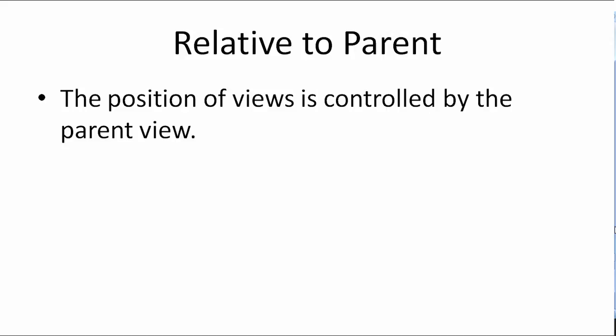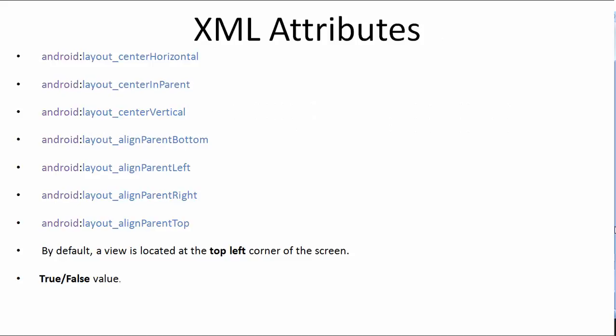Here are the XML attributes for relative-to-parent positioning: android:layout_centerHorizontal aligns a view to the center of the screen horizontally. layout_centerInParent aligns a view to the center of the screen both horizontally and vertically — right in the middle. layout_centerVertical aligns a view to the center vertically only. layout_alignParentBottom aligns the view to the bottom of the screen. layout_alignParentLeft aligns a view to the left side of the screen. layout_alignParentRight aligns the view to the right side of the screen. By default a view is at the top left corner, and all these attributes take a value of true or false.